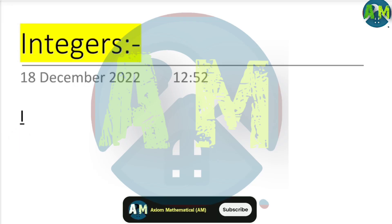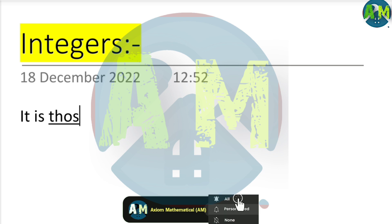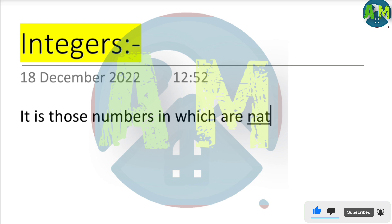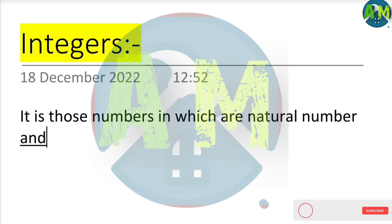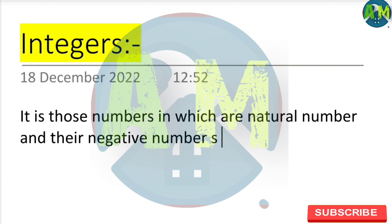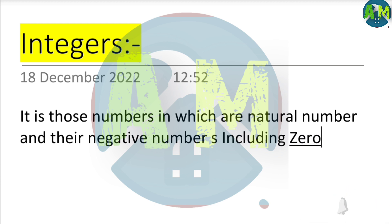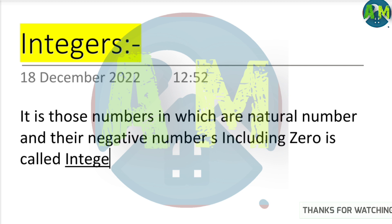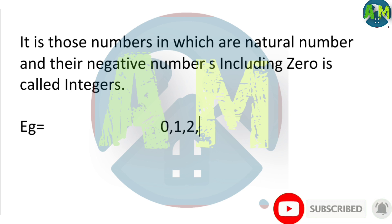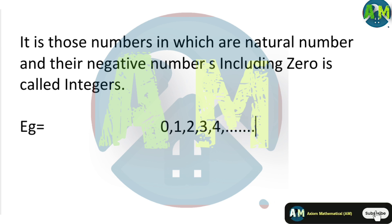Definition of integers: integers are those numbers which include natural numbers, their negatives, and zero. For example: 0, 1, 2, 3, 4, and so on.